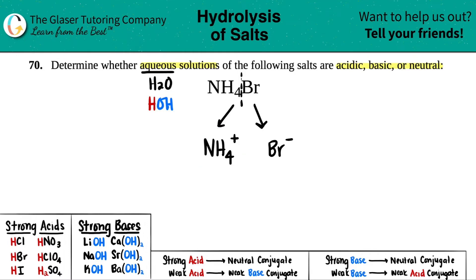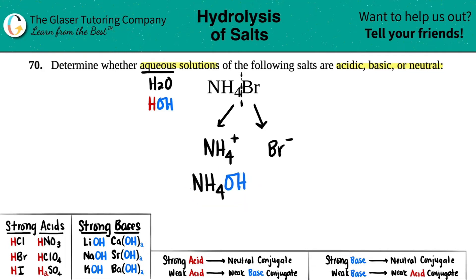So let's write out those compounds now. We have NH4, and I'm just going to tack on the OH — giving NH4OH. And then when H comes together with Br, I just get HBr.